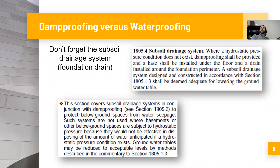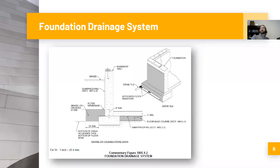It's also important not to forget the subsoil drainage system — this is what is commonly referred to as the foundation drain. The International Code Council's commentary includes a diagram that illustrates the concept. You can see the foundation wall, exterior grade, and interior below-grade space. The foundation drain collects stormwater and water that percolates through the soils, and transports that water away from the foundation to help keep it dry.